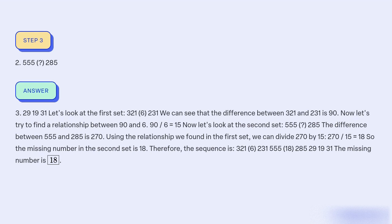Let's look at the first set: 321, 6, 231. We can see that the difference between 321 and 231 is 90. Now let's try to find a relationship between 90 and 6. 90 divided by 6 equals 15.